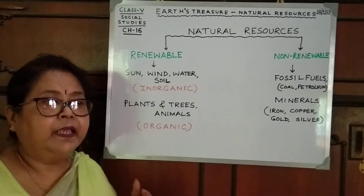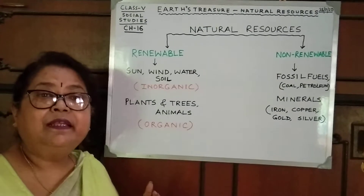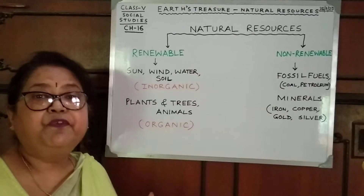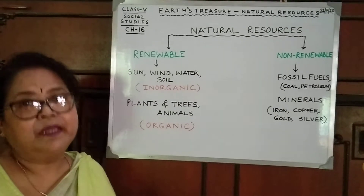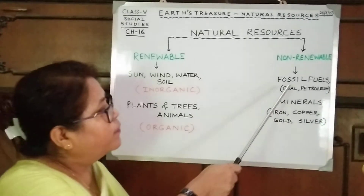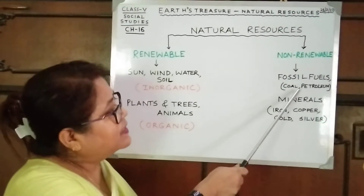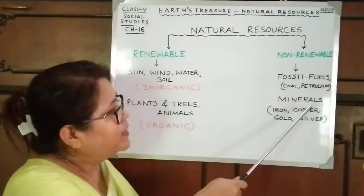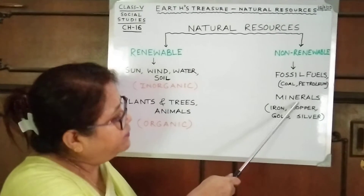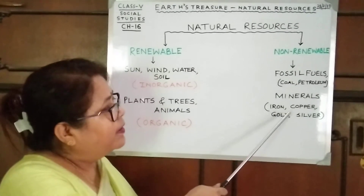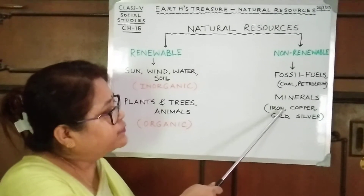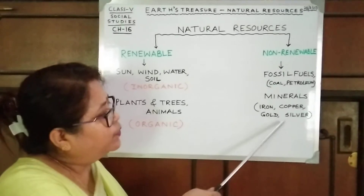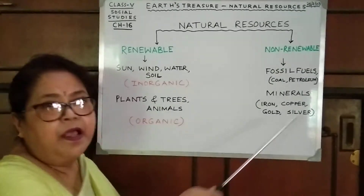Fossil fuels are the things we get from the remains of dead animals and plants. Examples of fossil fuels are coal and petroleum. And then there are minerals. Useful minerals we get include iron, copper, gold, and silver.